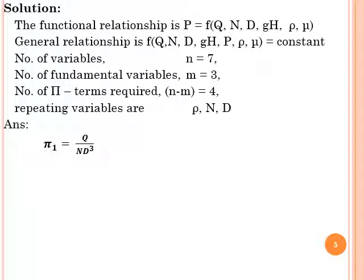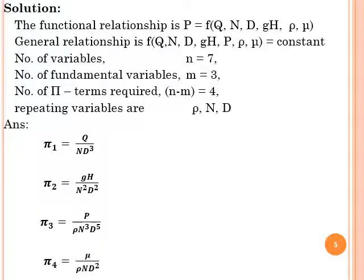After solving using the Buckingham Pi theorem, we obtain 4 Pi terms: π1 = Q/(ND³), π2 = GH/(N²D²), π3 = P/(ρN³D⁵), and π4 = μ/(ρND²). The repeating variables are ρ, N, D, and the remaining variables from the 7 are discharge, energy head, power, and viscosity.